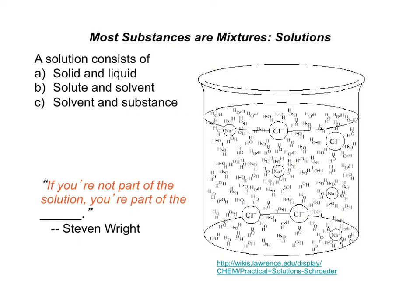A homogeneous mixture is a solution. The solute is the substance present in the smaller amount. The solvent is the substance present in the higher amount.